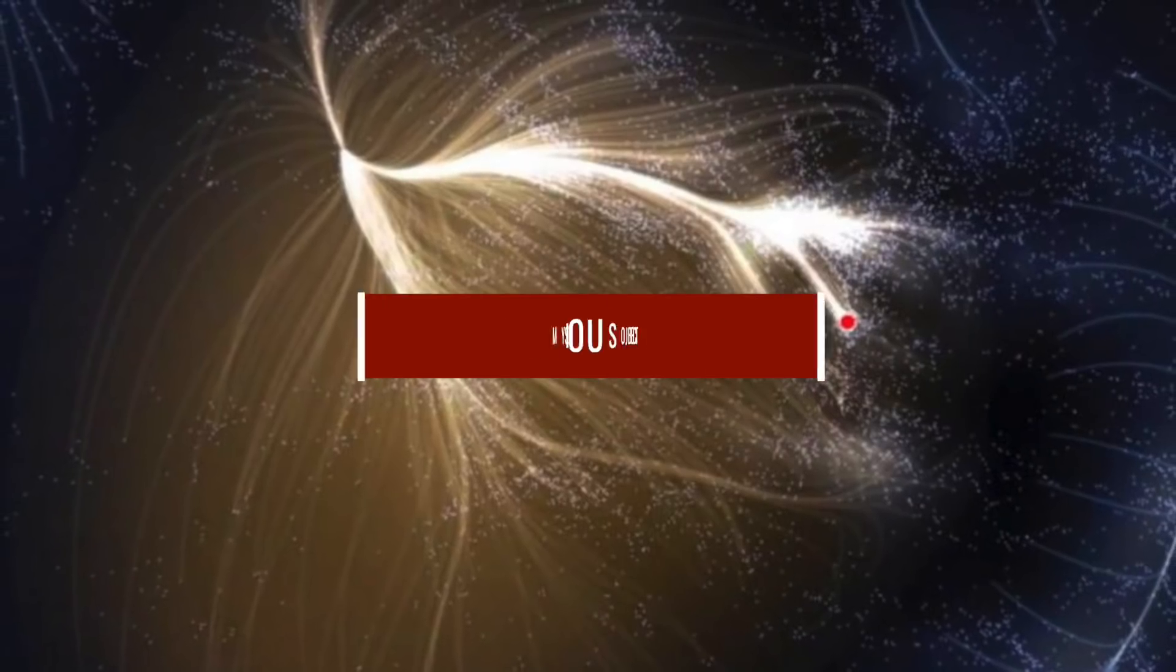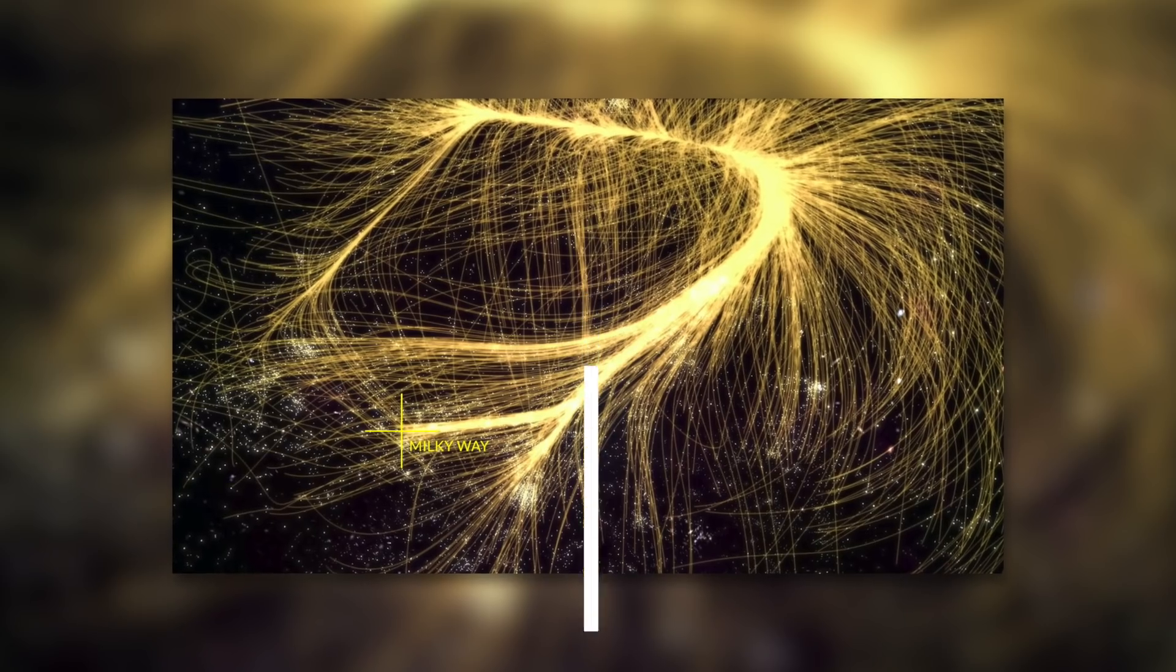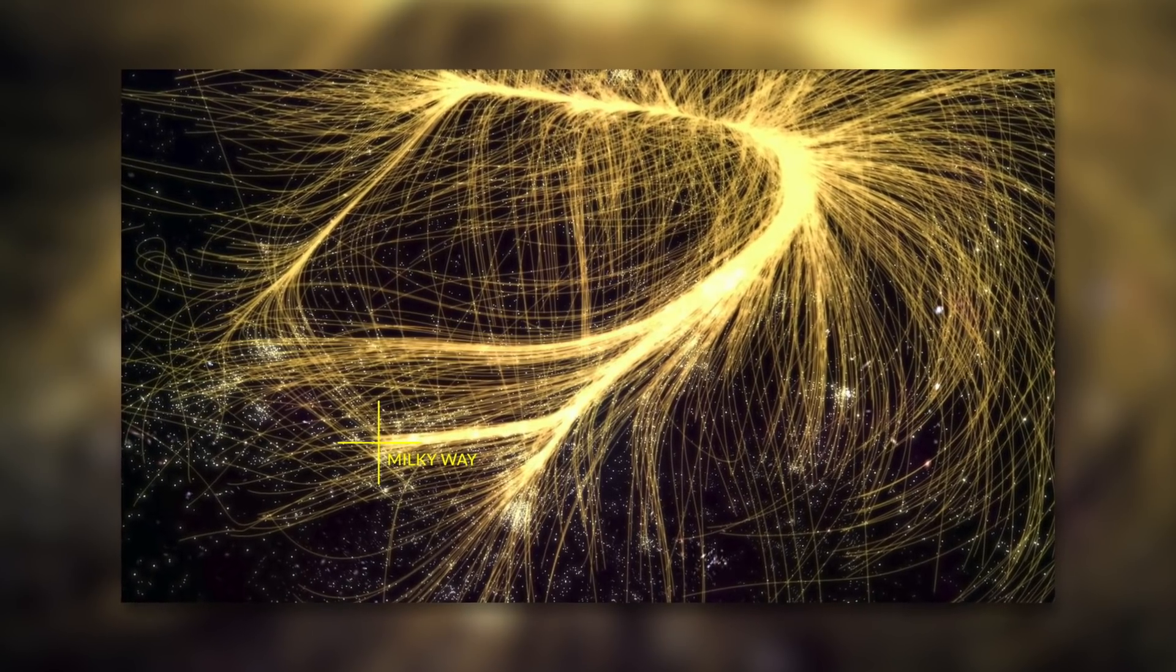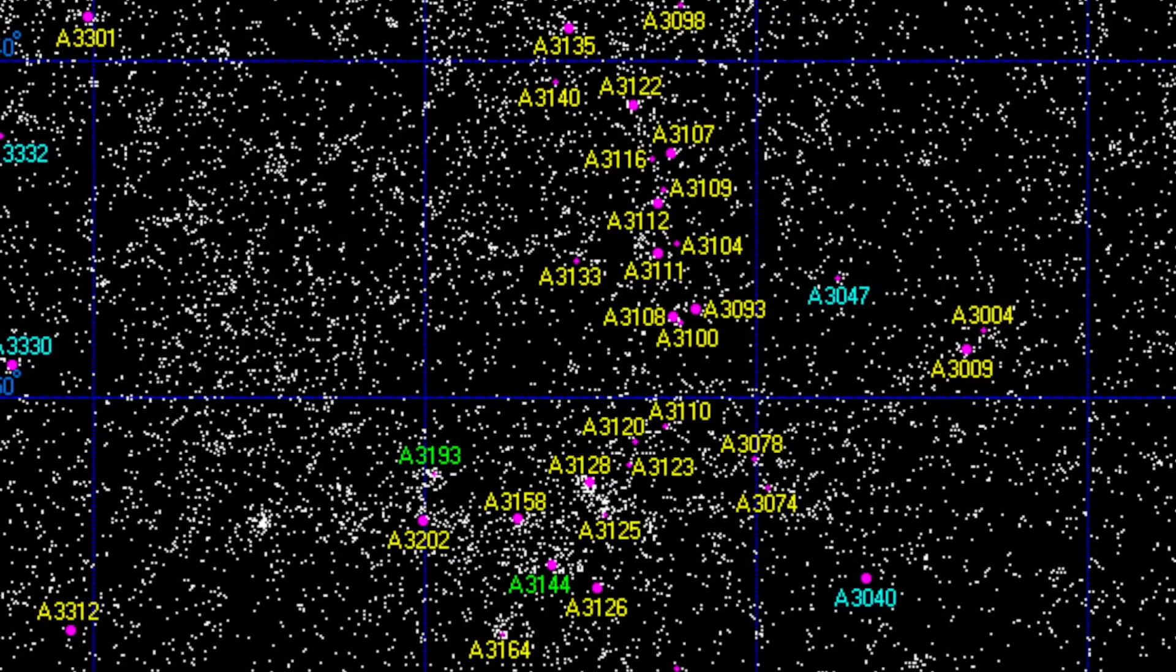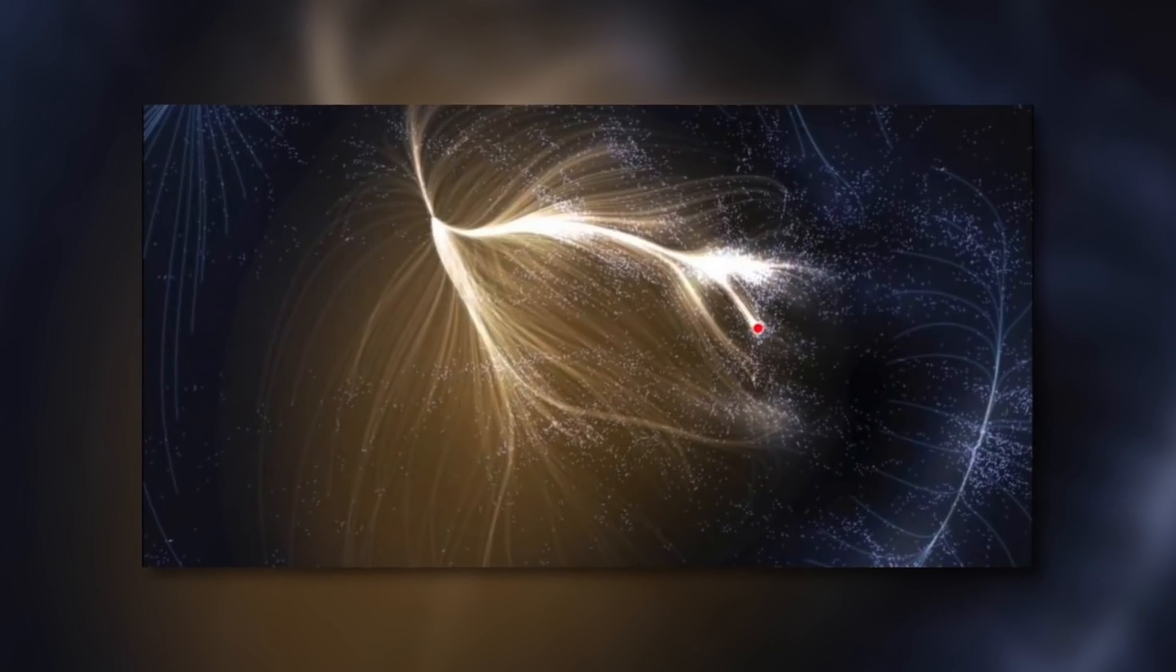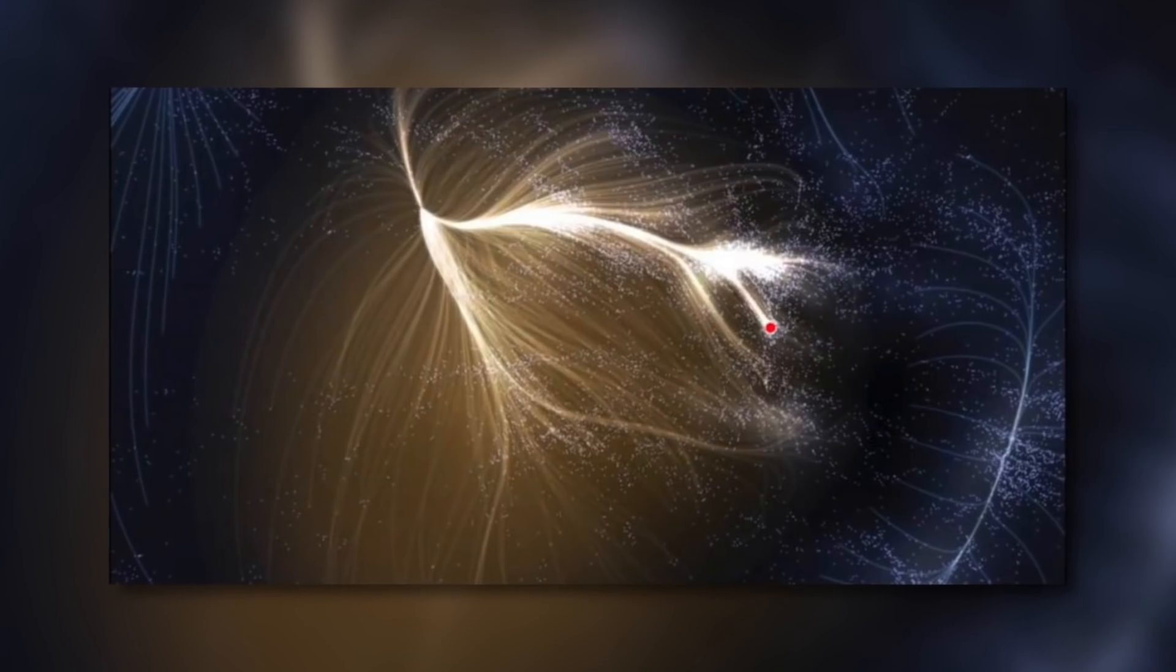Mysterious object in the Norma cluster of galaxies. With a distance of about 220 million light-years, the Norma cluster of galaxies is much closer to our blue home planet than the Horologym supercluster just presented. Although the large galaxy cluster is thus comparatively close to Earth, observing the structure is much more difficult than one might initially assume.